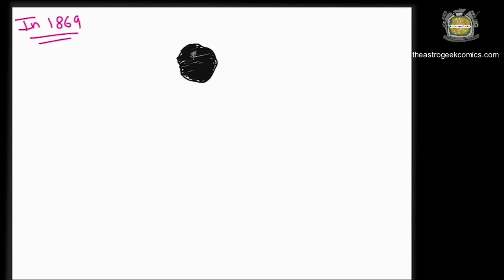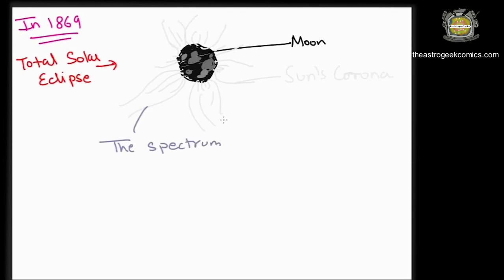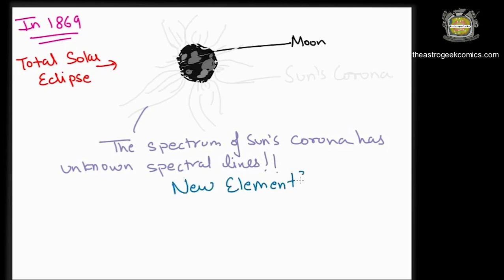Later in the next year, the spectra of the sun's corona, taken during a total solar eclipse, showed the existence of an earlier unknown green line which was taken as a sign of a new element too and then called coronium because it was observed only in the corona.